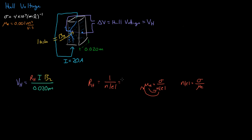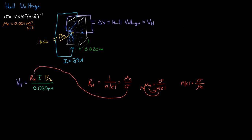So RH becomes 1 over (sigma / mu_E), which simplifies to mu_E over sigma. Now that we have that, we can just plug this into the Hall Voltage equation.